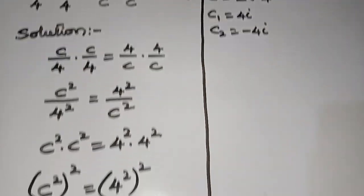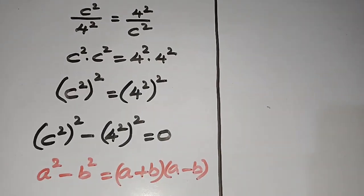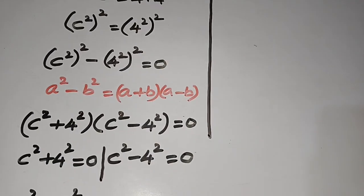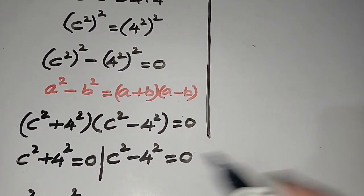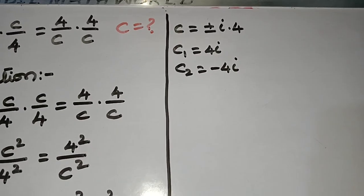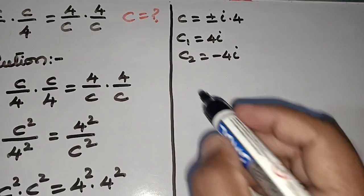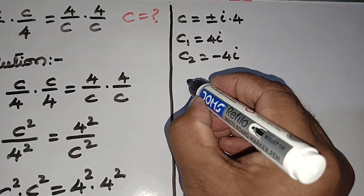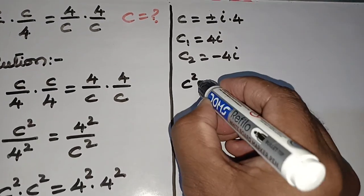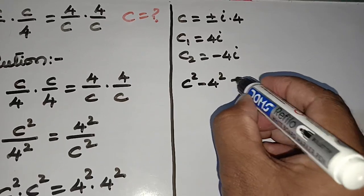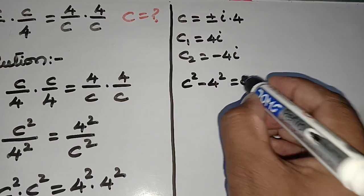Now for the other factor: c² - 4² = 0. Taking this equation, c² - 4² = 0.